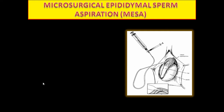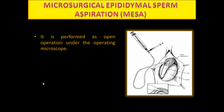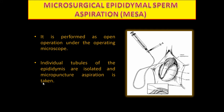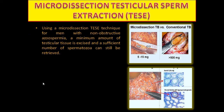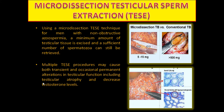Microsurgical epididymal sperm aspiration (MESA) is performed as an open operation under the operating microscope; individual tubules of the epididymis are isolated and micropuncture aspiration is taken. Microdissection testicular sperm extraction (MicroTESE): using the microdissection technique for men with non-obstructive azoospermia, a minimum amount of testicular tissue is excised and sufficient spermatozoa can be retrieved. Multiple TESE procedures may cause transient and occasional permanent alterations in testicular function including testicular atrophy and decreased testosterone levels.